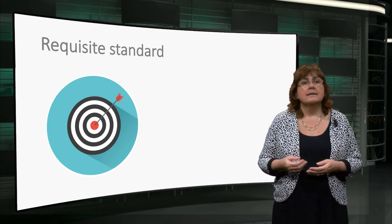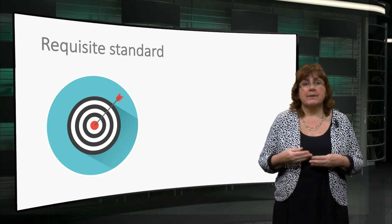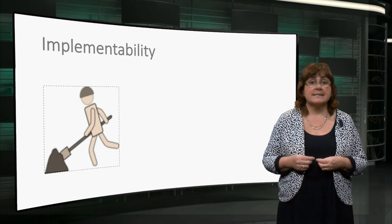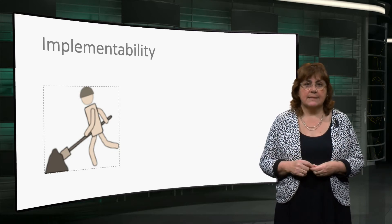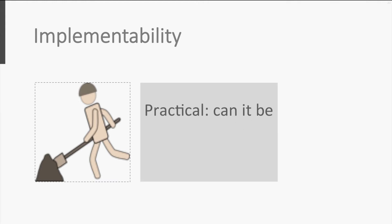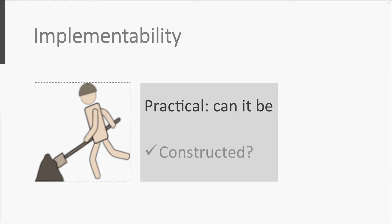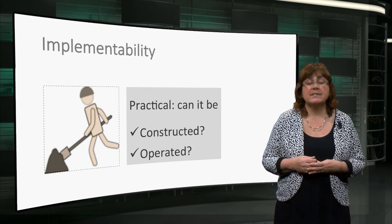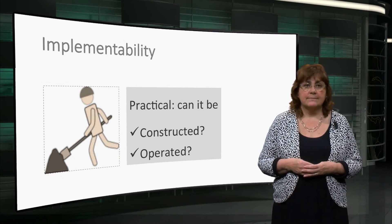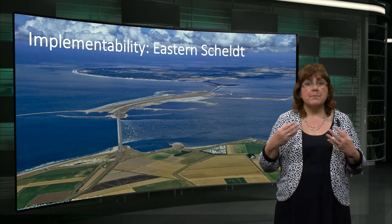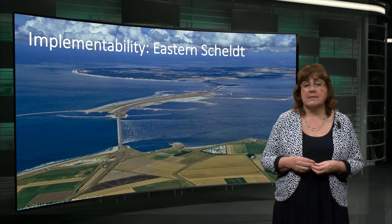Next, practical considerations related to building and operating the structure play a role. The underlying design principle here is implementability. This principle entails checking whether it is feasible and reasonable to construct and operate the infrastructure. Tried and tested methods are generally preferred above entirely new ones. An exception is the Eastern Scheldt storm surge barrier, for which many new design and construction methods had to be developed.